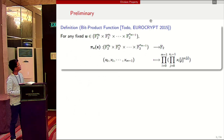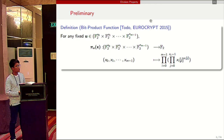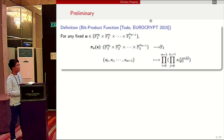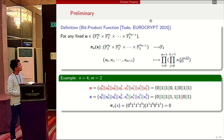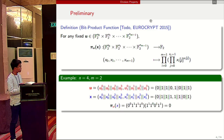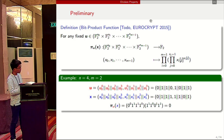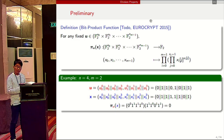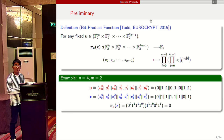First of all, we should take a look at some notation. For any fixed u, pi_u(x) is a Boolean function. It is defined as the product of some chosen bits of x, and we use vector u to choose the corresponding bits. For example, if n equals four and m equals two, pi_u(x) can be computed as x_0 to the power of u_0 times x_1 to the power of u_1, and so on. The value of pi_u(x) equals zero in this particular situation.